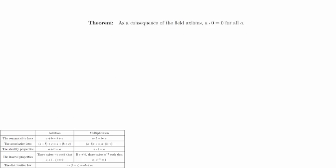Theorem. As a consequence of the field axioms, A times 0 equals 0 for all A. We will first observe that the identity property of addition implies that 0 plus 0 equals 0. Next, we will multiply both sides of the equation by A.